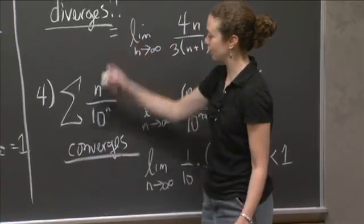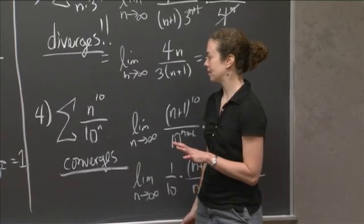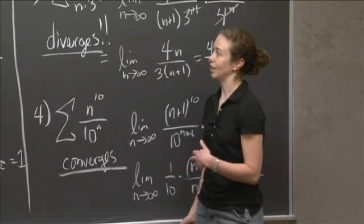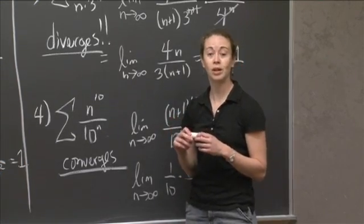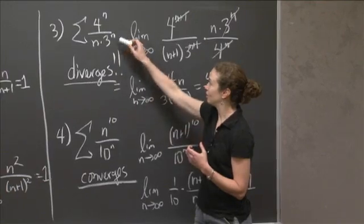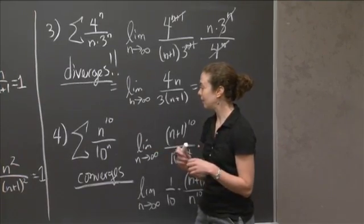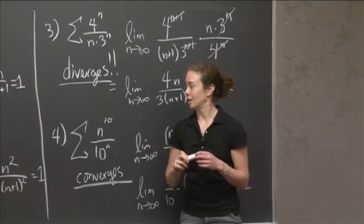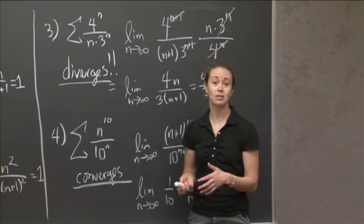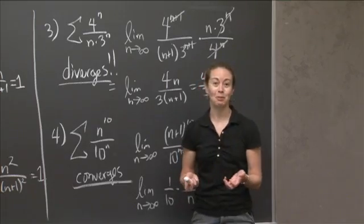So we had one that diverges, one that converges, and a few where we couldn't get conclusions. In the cases where L equaled 1, the integral test will tell you something. But for these exponential-type examples, the ratio test is a quicker approach. In the next video on the ratio test, I'm going to show you how to use this to determine the radius of convergence for Taylor series — that's going to be exciting.